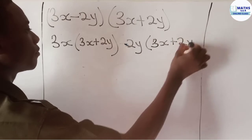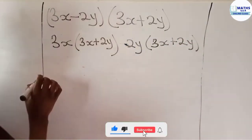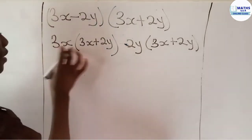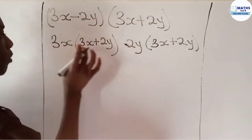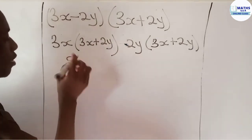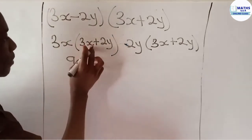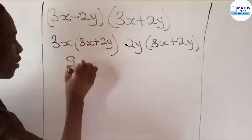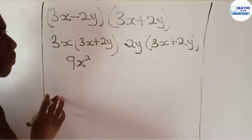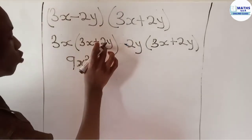Now that you are done, you take the 3x multiplied by each term. So 3 multiply 3 gives 9, and then x multiply x gives x squared. So we have 9x squared. 3 multiply 2, that is positive 2, gives you positive 6, and then x multiply y gives xy.